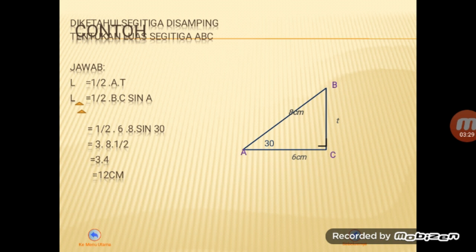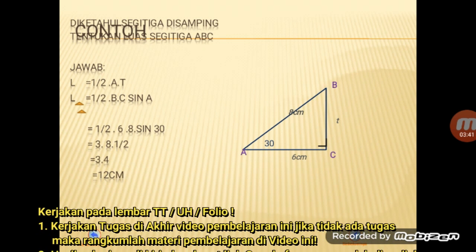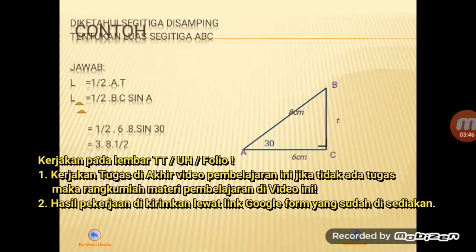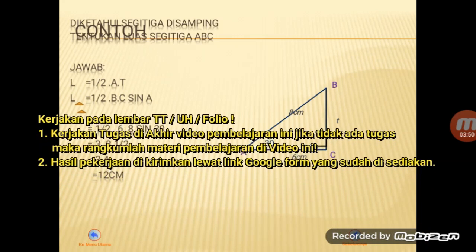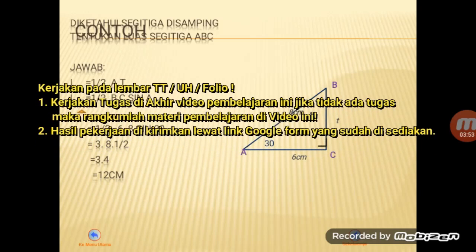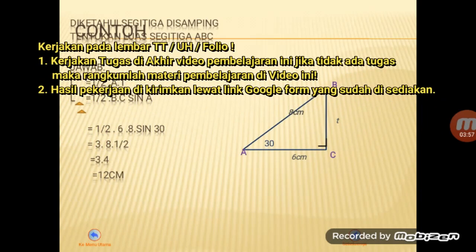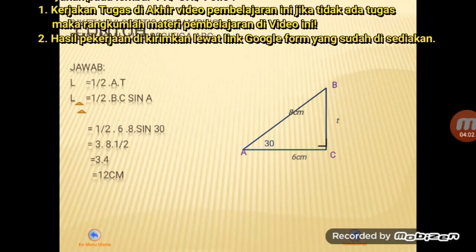Maka luas segitiga itu sama dengan setengah alas kali tinggi, berarti setengah dengan alasnya adalah 6 cm, tingginya adalah C kali sin A, atau berarti sama dengan setengah kali 6, kali 8, kali sin 30. Berarti setengah kali 6 adalah 3, dikalikan 8, untuk sin 30 adalah setengah, sehingga dapat ditulis 3 kali 4, sama dengan 12 cm.